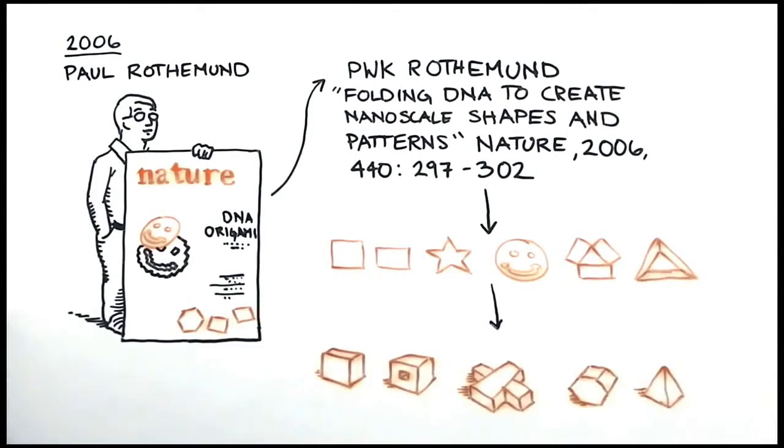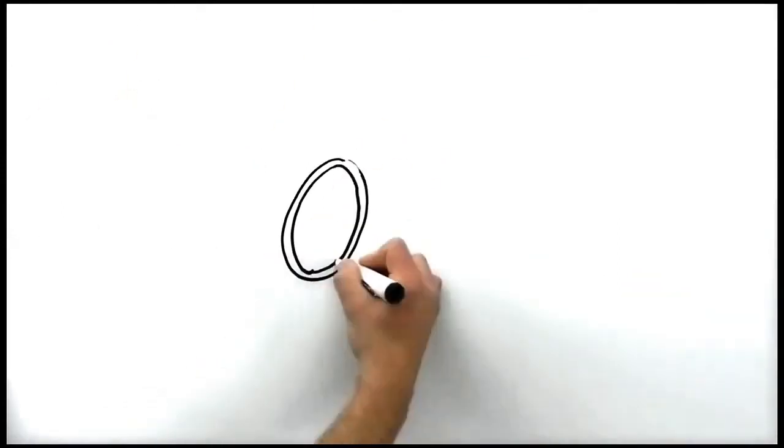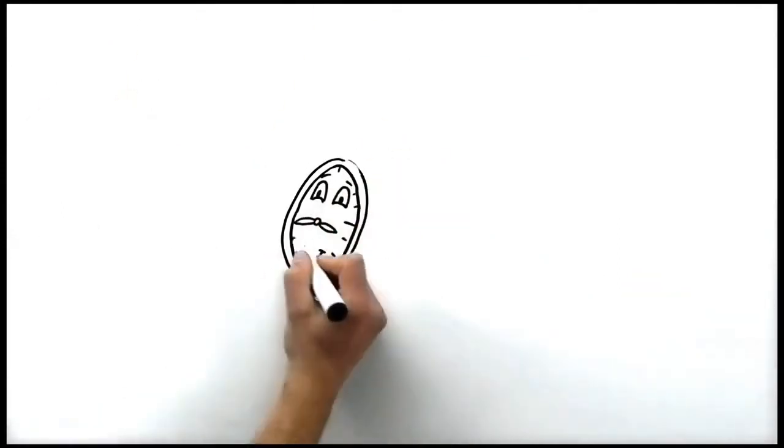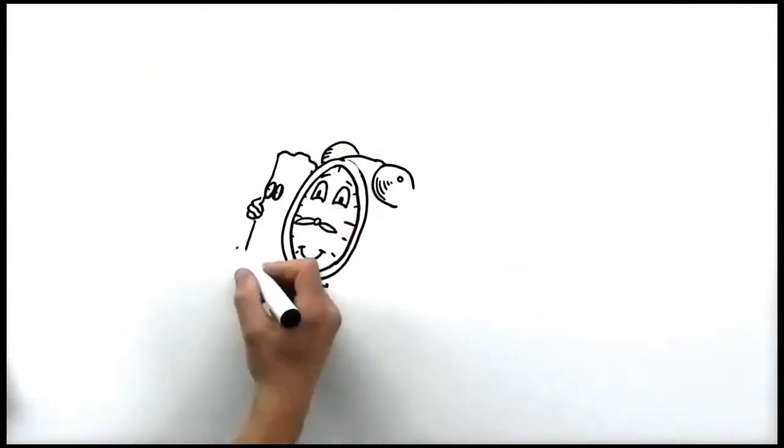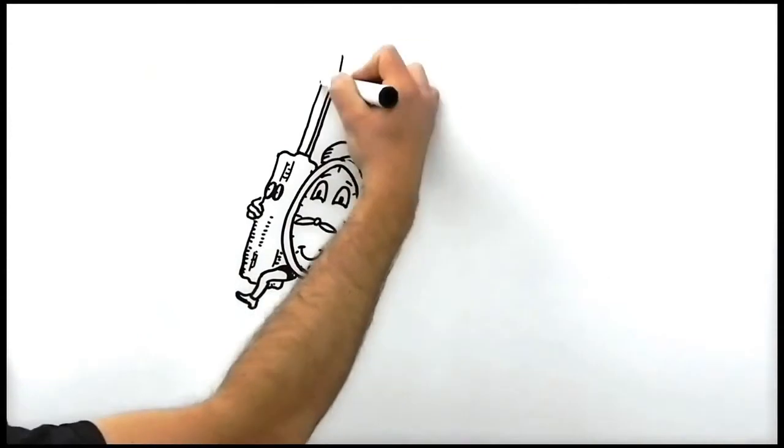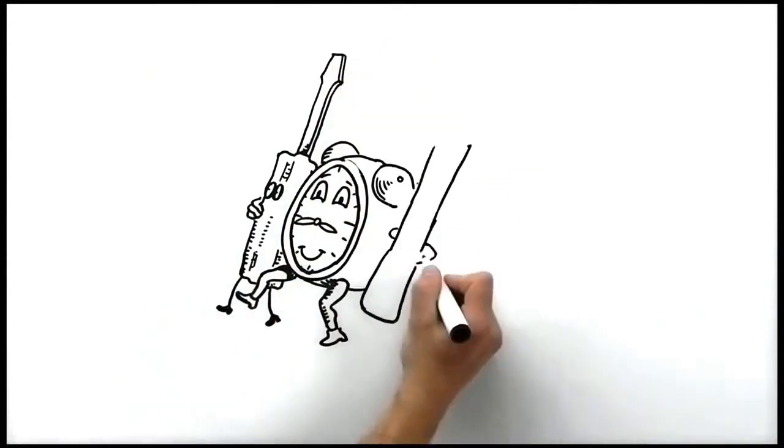Looking forward, we're currently using DNA origami along with functional modifications such as protein or nanoparticle attachments in order to start building tools that are precisely the right size and shape for carrying out experiments on the nanoscale.